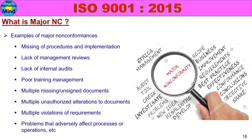Now you can identify auditor terms: strengths, conformance, observations or opportunities for improvement, non-conformances, minor NC, and major NC. These are all key ideas. This is an ISO 9001:2015 video. Thank you, friends. See you next time.